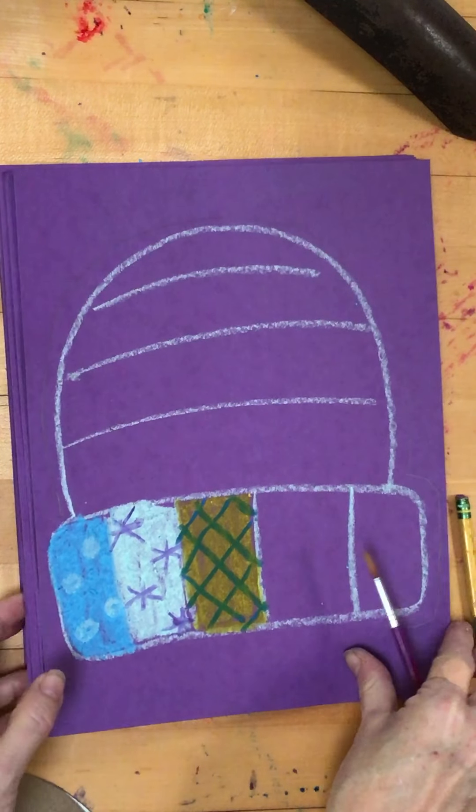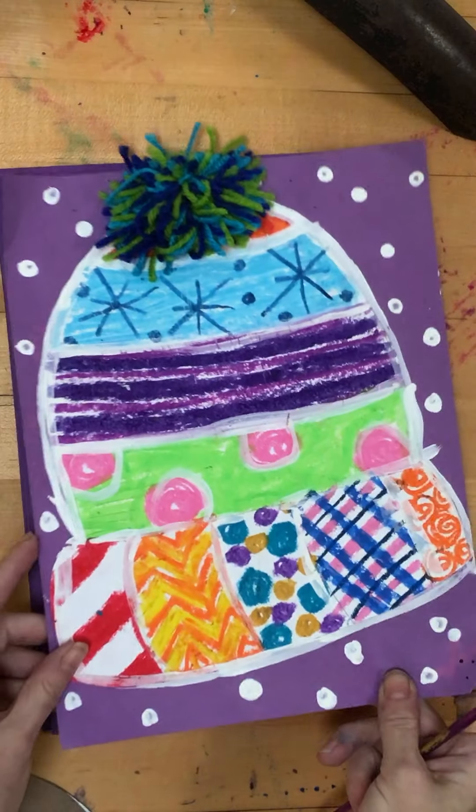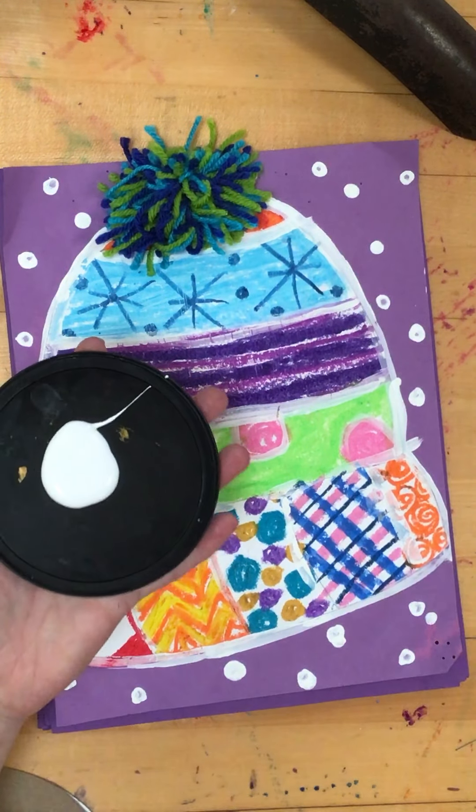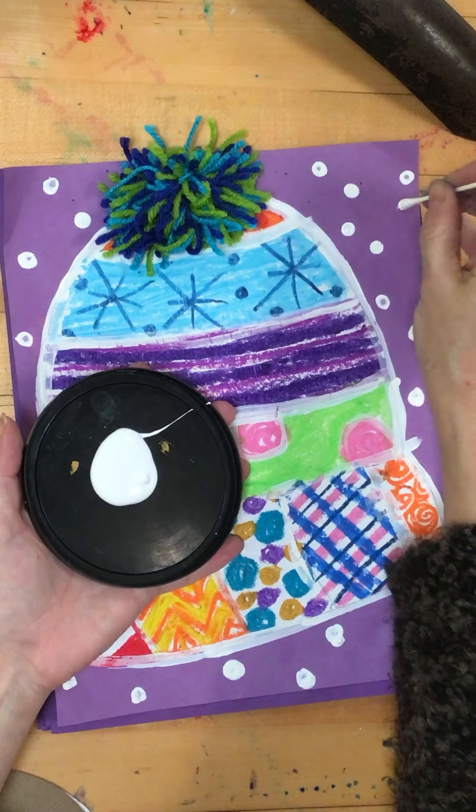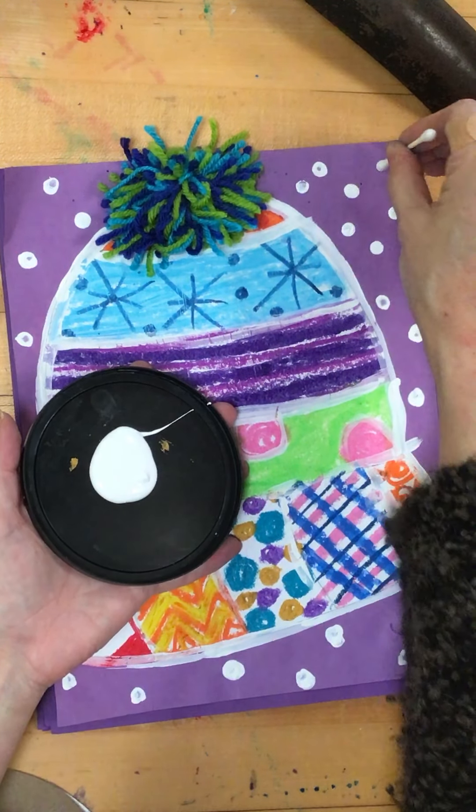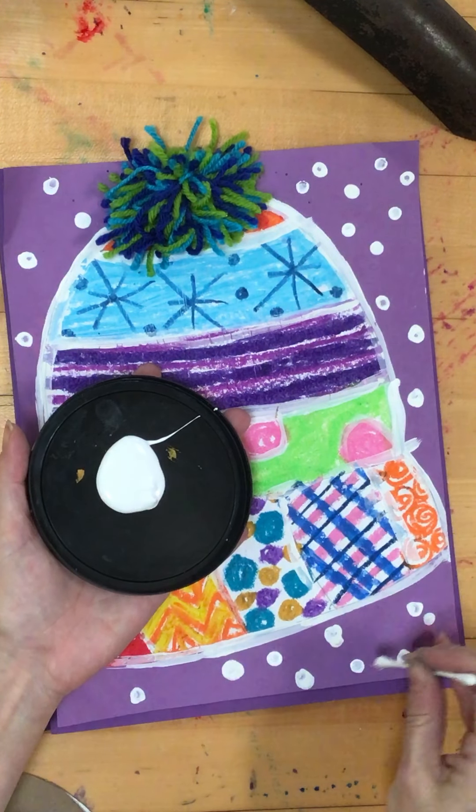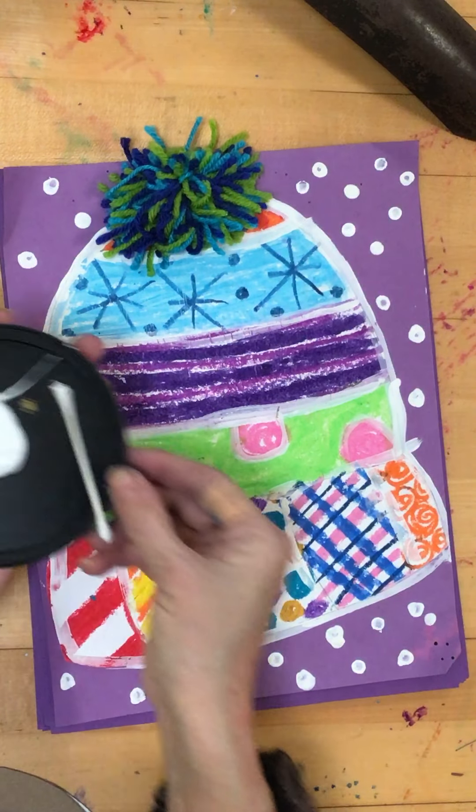When you're all done coloring, you're going to get some white paint. And we've done this before with the Q-tip. And I'm going to make snow going around my hat. And remember, when we do this, we only want to do a couple at a time. And we're not going fast, or else the snowflakes get ugly.